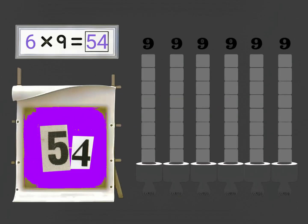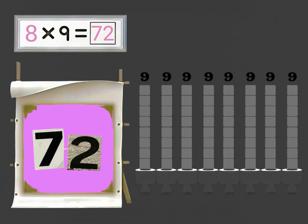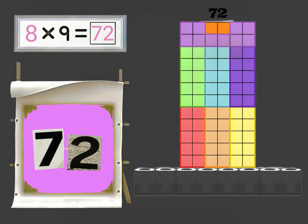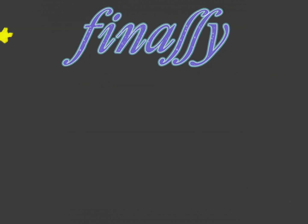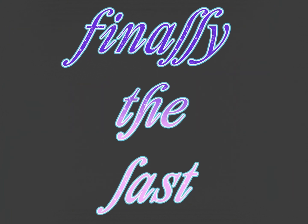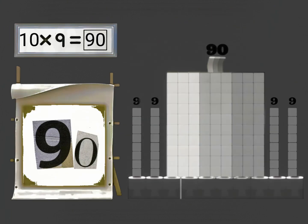Six times nine is fifty-four. Seven times nine is sixty-three. Eight times nine is seventy-two. Nine times nine is eighty-one. Finally, the last in line. Ten times nine is ninety.